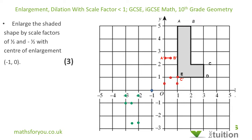For D — from the center of enlargement, I move 4 to the right and 1 up. With scale factor one half, I move 2 to the right and a half up. So D prime is there.